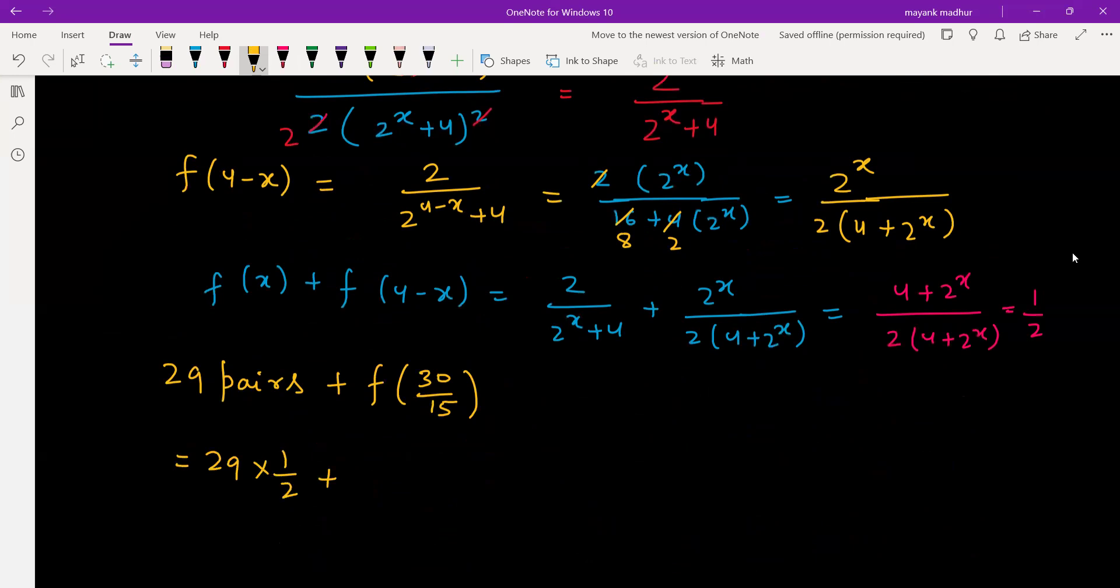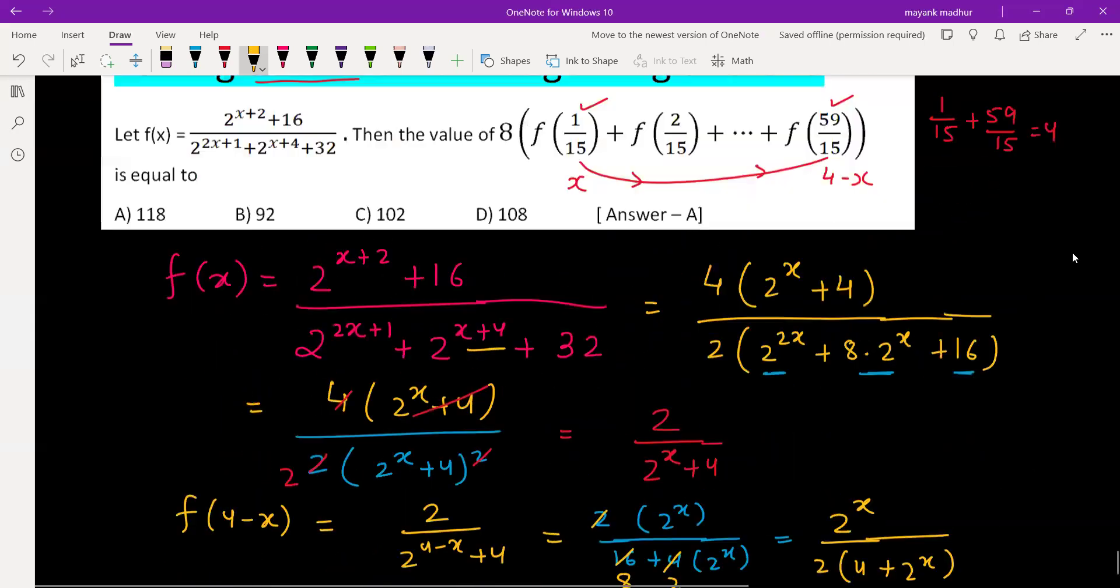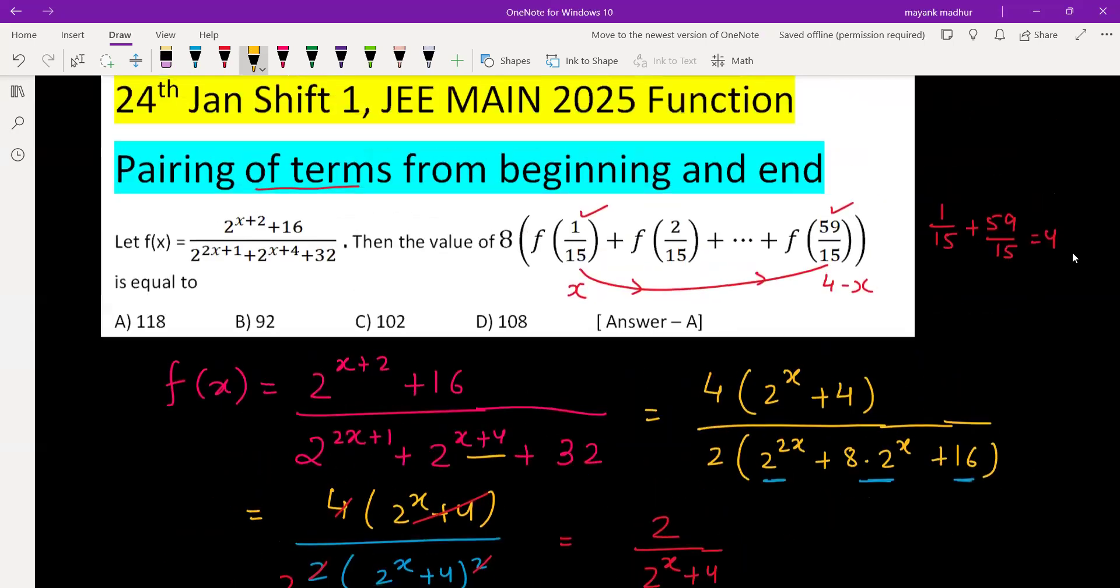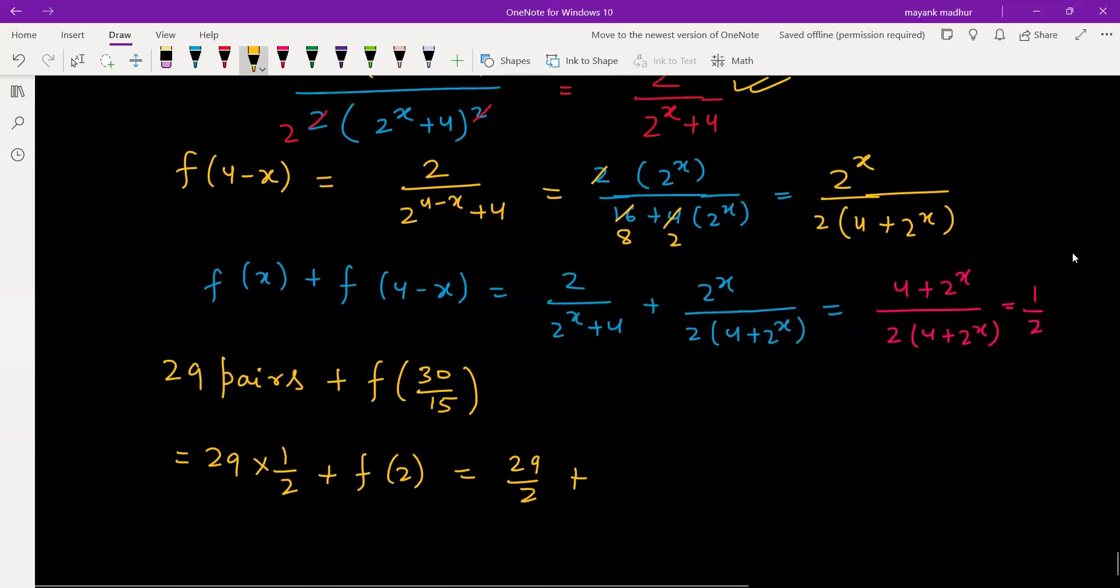Value of each pair is half, so 29 into half plus f(2). So 29 by 2 plus, what is f(2) value?